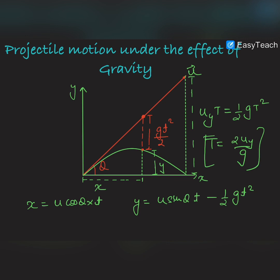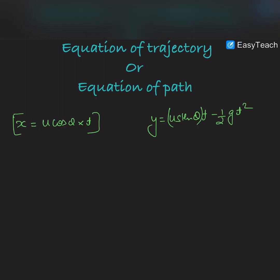Now we understand projectile motion under gravity, so let us discuss why this motion is parabolic by establishing the equation of trajectory. The equation of trajectory is the relationship between the x and y coordinates of the projectile. We have already discussed that x = u·cos θ·t, and y = u·sin θ·t − ½gt².